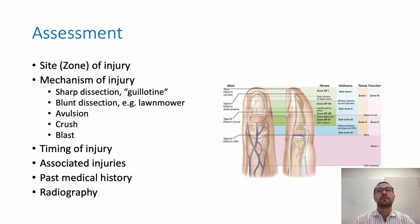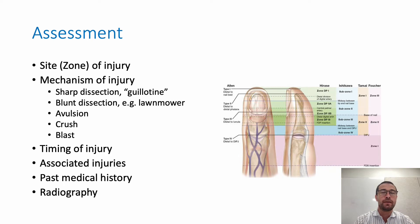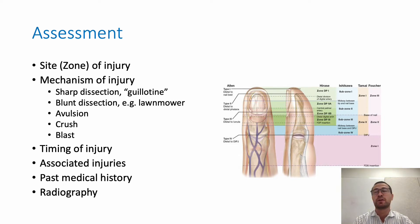When we assess these injuries, some of the things we need to look for are classifying the site or zone of injury, understanding what the mechanism of injury is — whether it's a sharp dissection like what they call a guillotine mechanism, whether it's a blunt dissection or laceration type, for example with a lawn mower or a power saw, an avulsion where maybe a ring has gone round a digit and pulled it off, a crush or a blast injury. The timing of injury is important to know, so we have an idea as to whether there is a chance of re-implantation. Associated injuries — if the patient's been in a multi-trauma, for instance, they're probably not going to be a candidate for replantation. Past medical history, including things like diabetes and smoking, anything that might affect the vascular status. And it's important to get radiography or X-rays to elucidate the nature of any bony injuries as well.